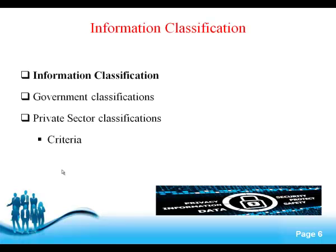Criteria for classification include value, age, useful life, and personal association. To summarize today's lecture number 13: we covered the information security definition, CIA, reverse CIA, organizational structure, and information classification.